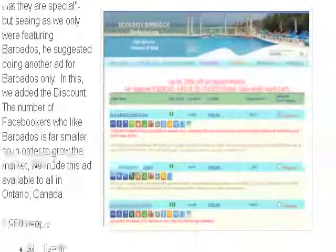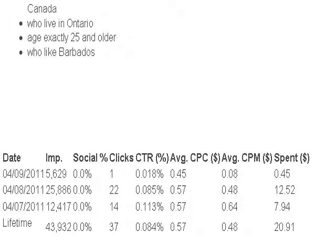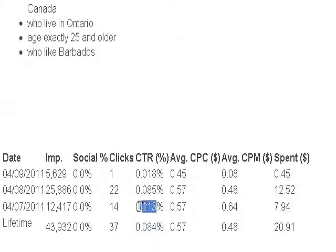We changed the demographics slightly. The demographics went down to 1,960 people. We expanded the range to all of Ontario, kept it at 25 and over, and focused on those who like Barbados — so this ad is only seen by people who like Barbados. The click-through rate is very good: we're getting 0.85 to 0.84, and it was 1.13% at one point.